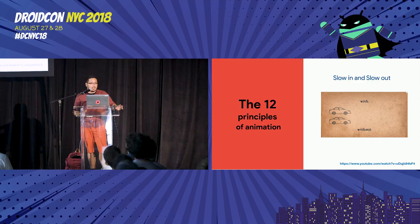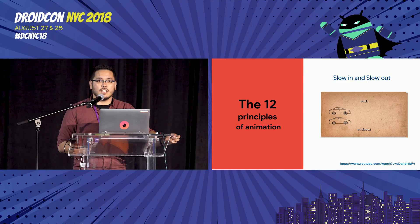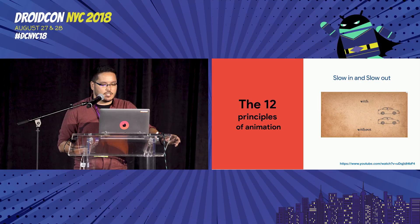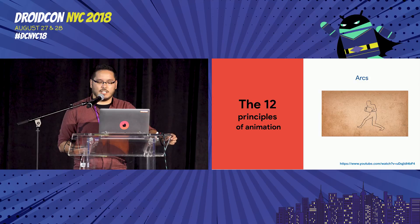Another principle is slow in and slow out. I think most of you are used to it — it's very basic, it's the interpolated one. You can see a car moving without this interpolator at the bottom; it just feels unnatural. On the top, one that has an accelerator and decelerator makes much more sense, because a car doesn't start moving at 30 kilometers per hour — it starts at zero and gets to 30 at some point.